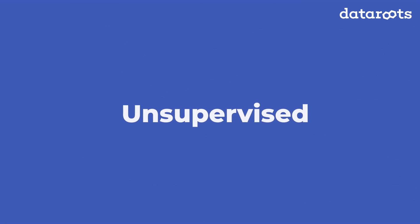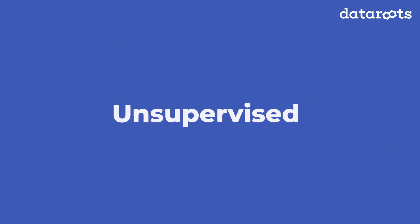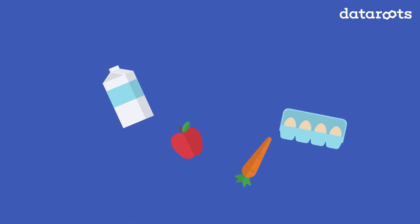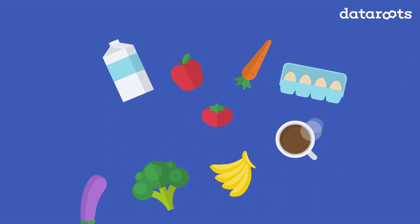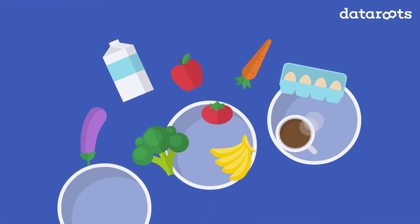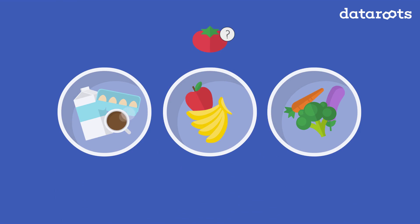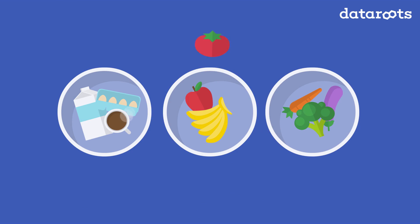In unsupervised learning, we don't know what should come out specifically. The idea is to look into the structure of the data. Those models are used to, for example, group similar data together.